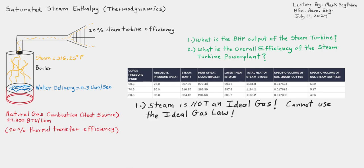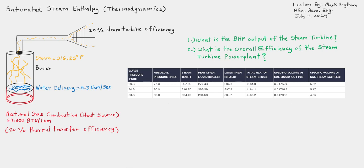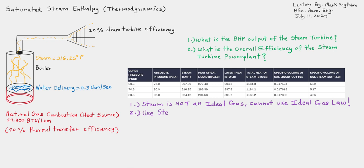The first step is to realize that steam is not an ideal gas. This means we cannot use the ideal gas law when working with steam enthalpy. We need to use steam tables. Whenever you're dealing with saturated steam enthalpy problems, always find the steam heat levels as the data and metrics source.